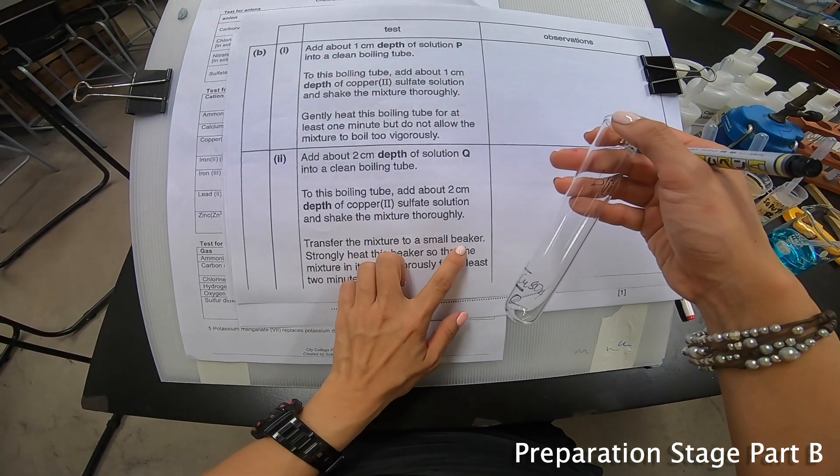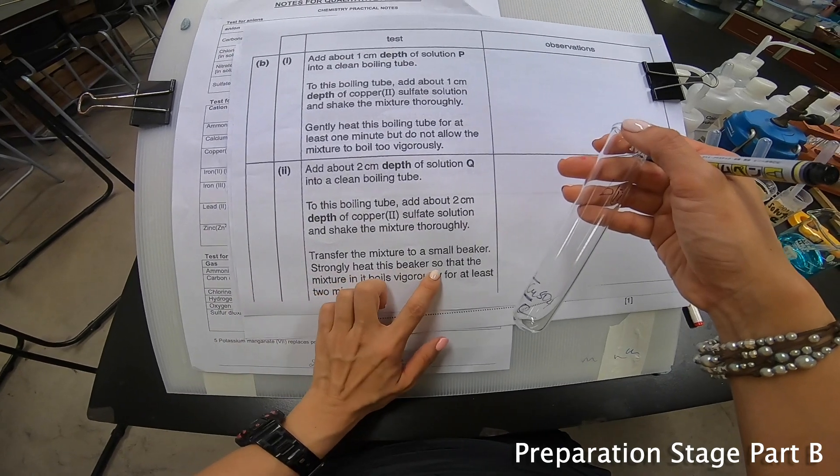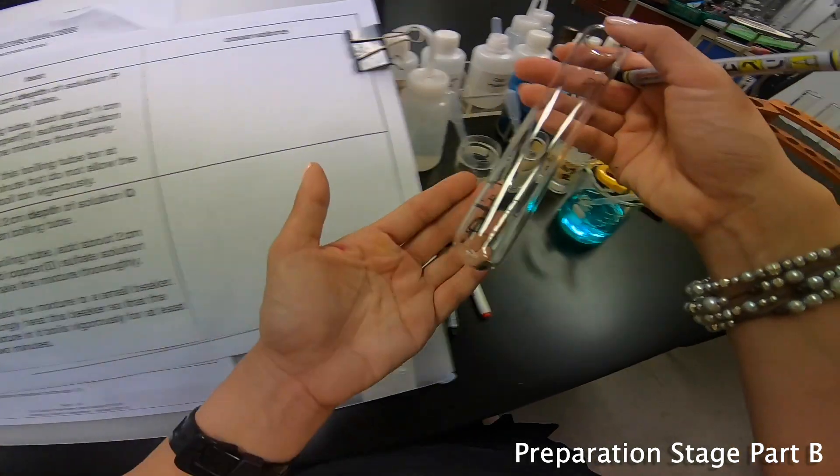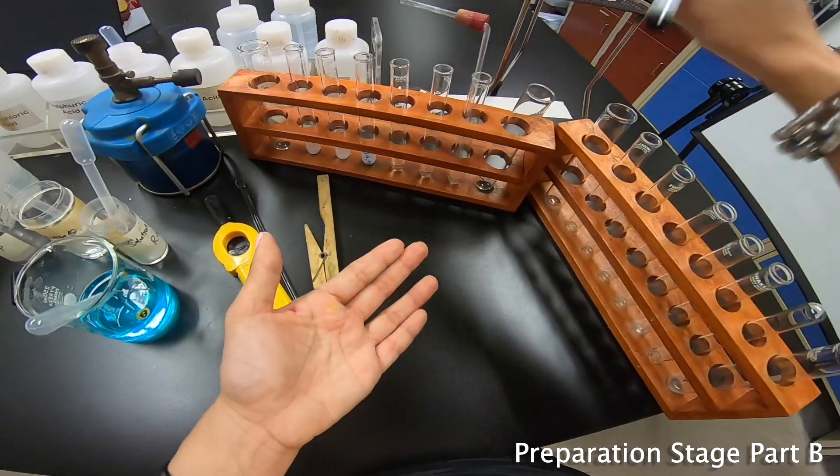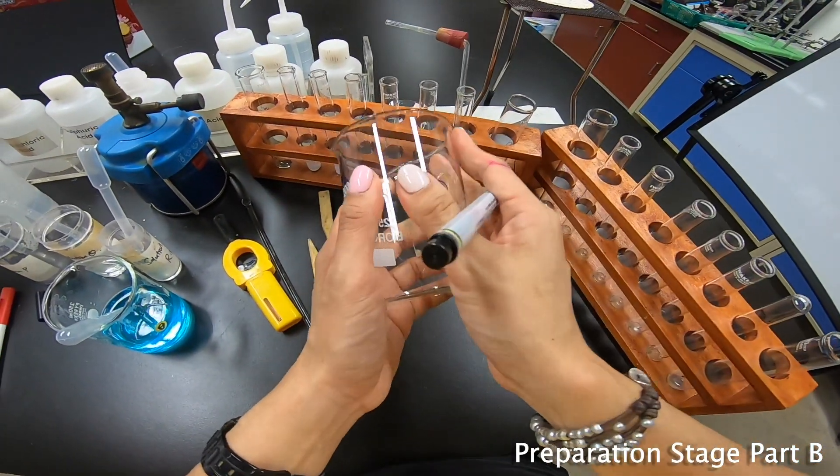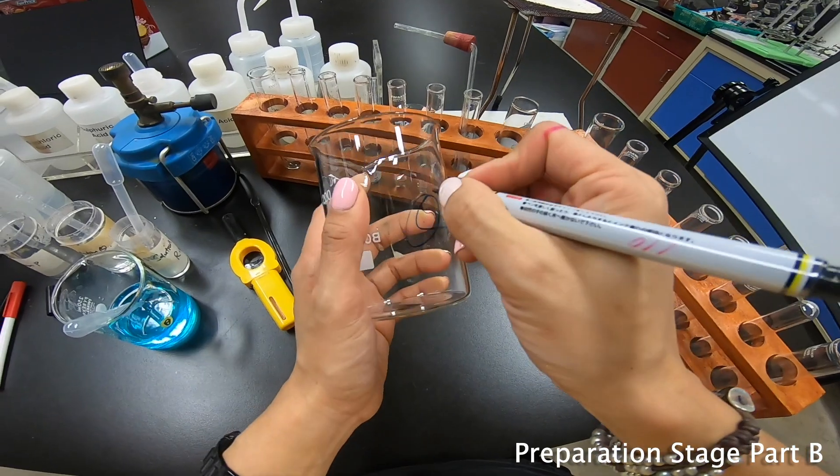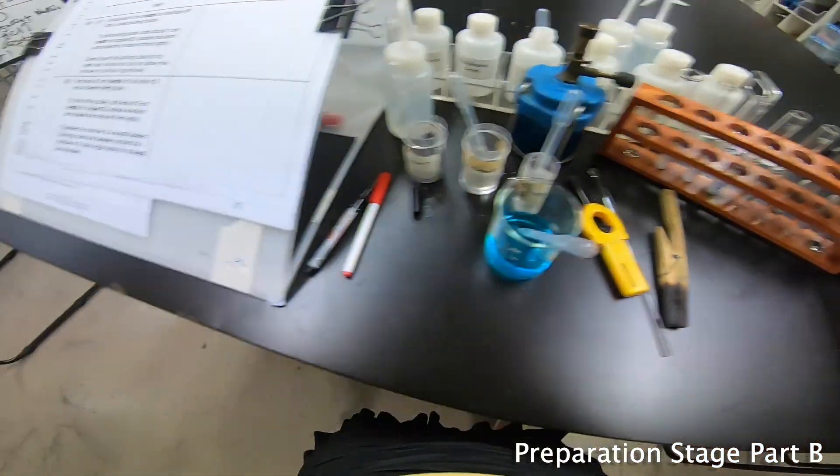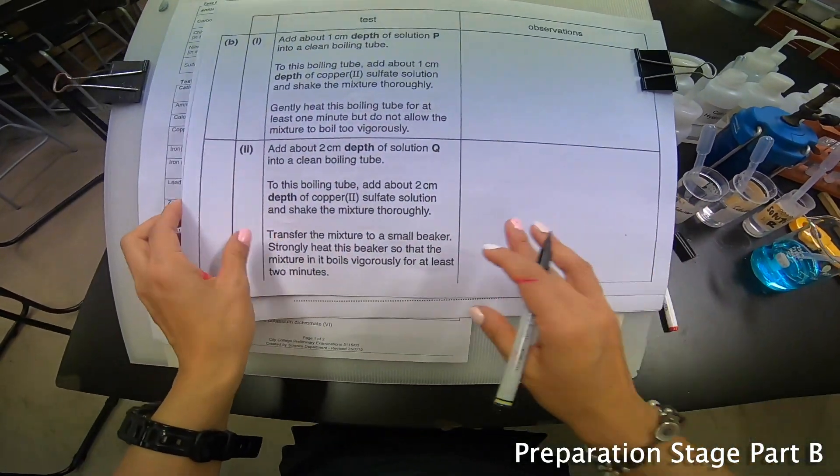Transfer the mixture to a small beaker and strongly heat this beaker so that the mixture in it boils vigorously for at least 2 minutes. So this portion here I put it over here. And then let me label Q. Actually I have labeled it just now already. So label Q. Let me put this back here. Now let's move on to the next part.